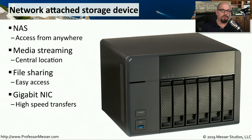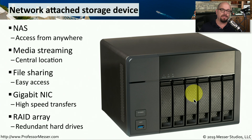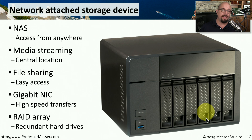Because of all of this network communication, you want the fastest possible throughput, so it's very common to see a gigabit speed network interface card. Because all of your important data is in one central place, you don't want a single drive failure to cause all of your data to be unavailable. For that reason, it's very common to set up a redundant array of inexpensive disks, or a RAID array, which provides redundancy so that if any single drive fails, you still have access to your data.